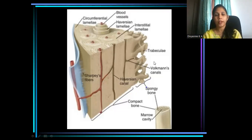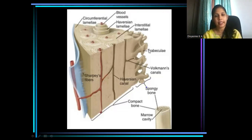What about the trabecular bone or cancellous bone? It has got numerous trabeculae within it, and in between these trabeculae, the space is filled with bone marrow.